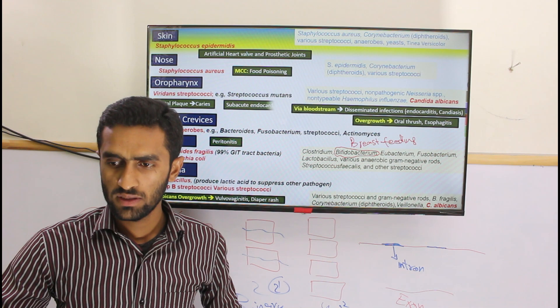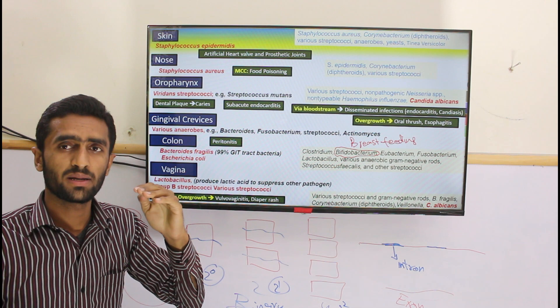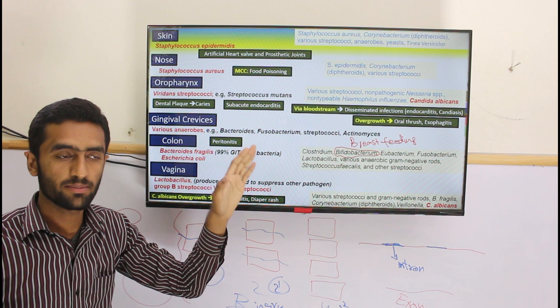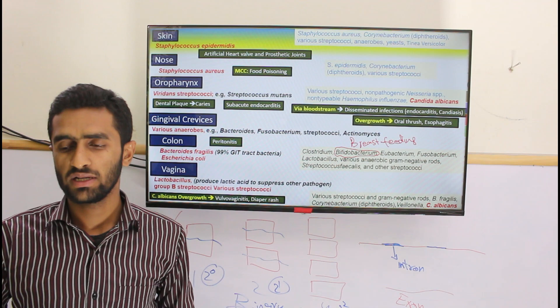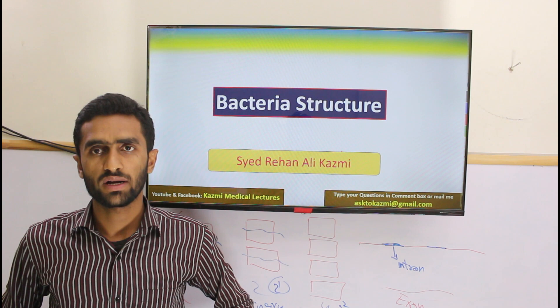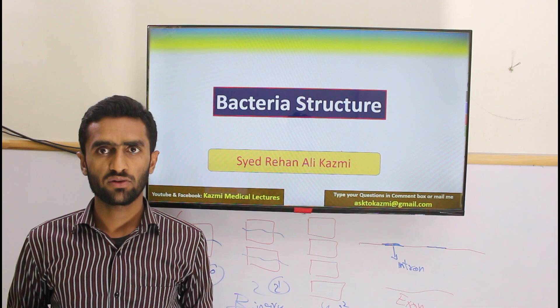Endocarditis from these organisms is also important. Acute endocarditis has rapid onset and is more virulent, while subacute endocarditis is slowly growing and less virulent. This session is now over, and we will look at bacterial structure and vector biology in the next segment. Thank you very much.